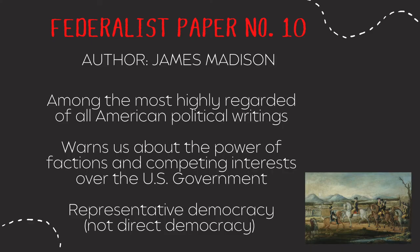Federalist Paper Number 10 was written by James Madison and is among the most highly regarded of all American political writings — perhaps the most famous of all the Federalist Papers. Madison writes that a strong federal government can protect liberty by guarding against control by a narrow interest, which he called a faction. Federalist Paper Number 10 is considered an explicit rejection of direct democracy by the founding fathers. Instead, it argues that a representative republic would be more effective against partisanship and factionalism — from this perspective, the larger the better. It warns about the power of factions and competing interests over the United States government, arguing that in a representative democracy, ideas can be examined by qualified officeholders and the odds of one majority group getting all political power are nearly impossible.